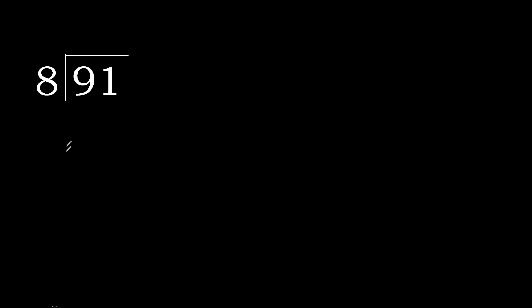91 divided by 8. Starting with 9: 9 is not less than 8, so we work with 9 here. 8 multiplied by which number is nearest to 9 but not greater? 8 multiplied by 2 is greater, so multiply by 1 is 8. 9 minus 8 is 1.